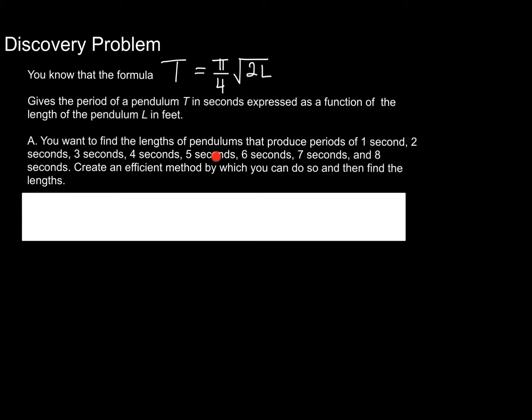So part A, I want you to find the lengths of the pendulums that produce periods of 1 second, 2 seconds, 3 seconds, 4, all the way through 8 seconds. And before you go ahead and start doing things, I want you to think about what you're going to have to do. I want you to come up with a method and process that will make it most efficient, so you have to do the least amount of work. Go ahead and organize your answers in a table, and then once you've done that, go ahead and press play. And we'll talk briefly about what you're going to do for part B.